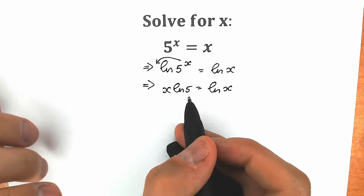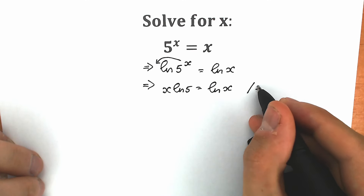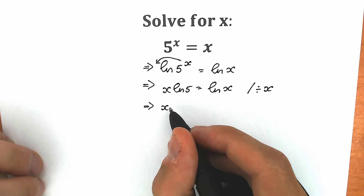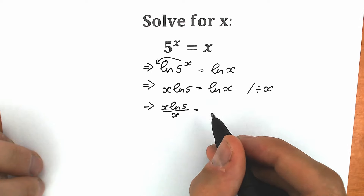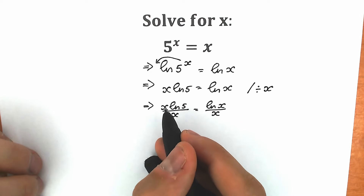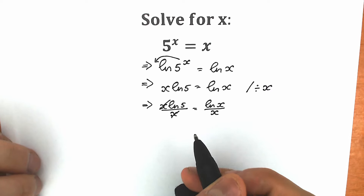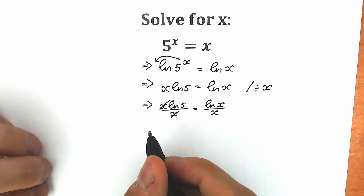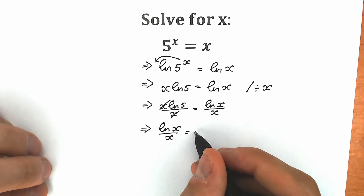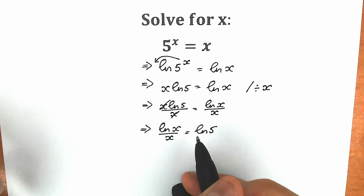Now let's try to separate our constants and variables. Let's divide both sides by x. When we divide both sides by x, we can cancel x from the left side. So we have natural log 5 equal to natural log x over x. Let's put the variable on the left side: natural log x over x equal to natural log 5. This is our first step — variables on the left, constants on the right.